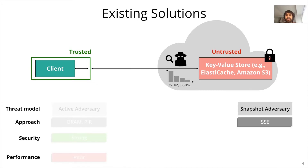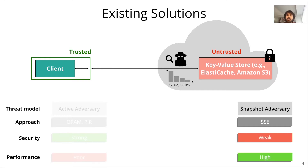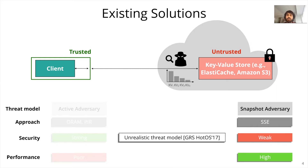Searchable encryption approaches, on the other hand, assume a snapshot adversary model, where an adversary can observe a snapshot of the data store, eliminating the possibility of access pattern attacks altogether. While this enables high performance, the security is weak and has been shown to be an unrealistic threat model for real-world deployments.